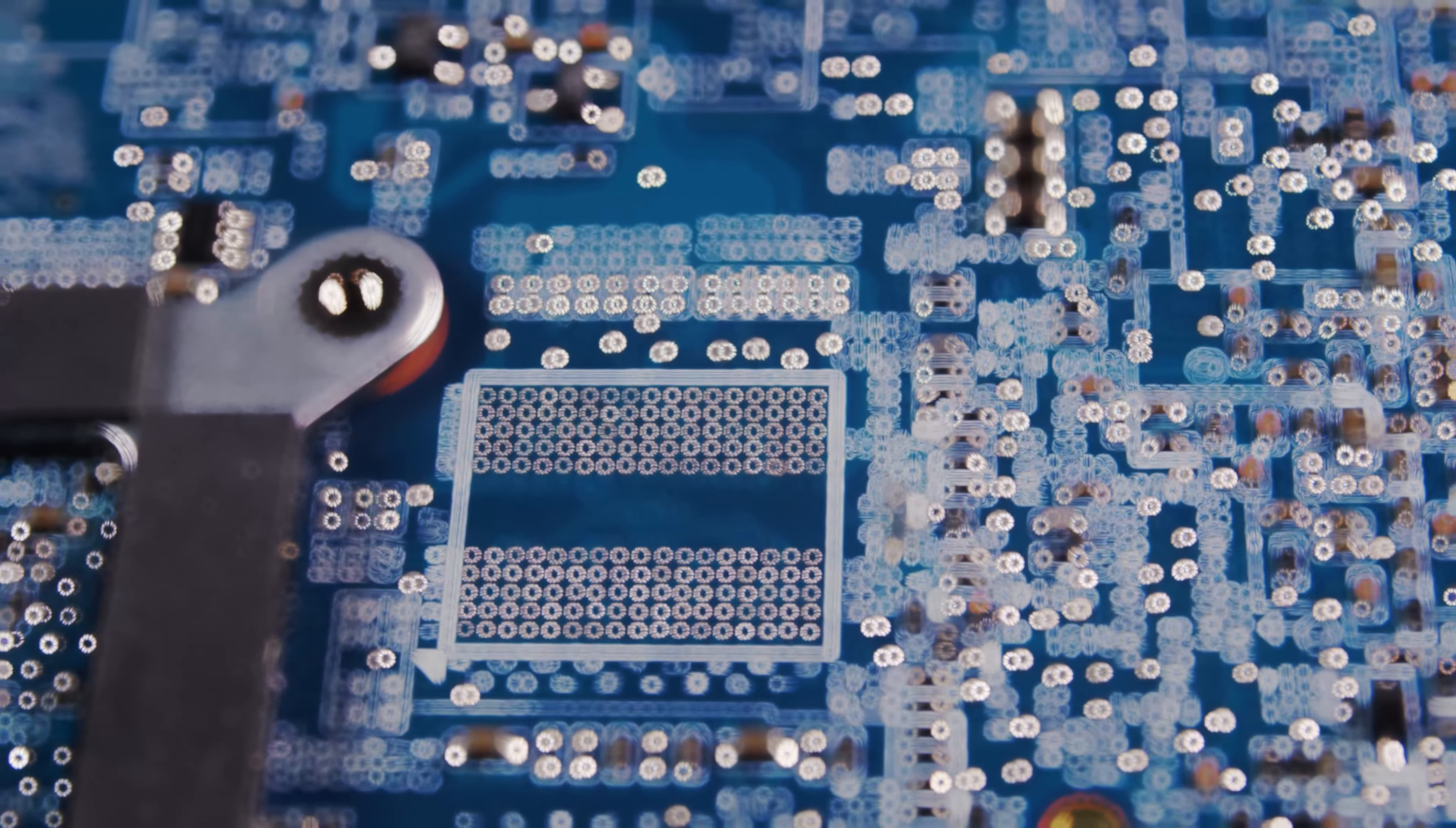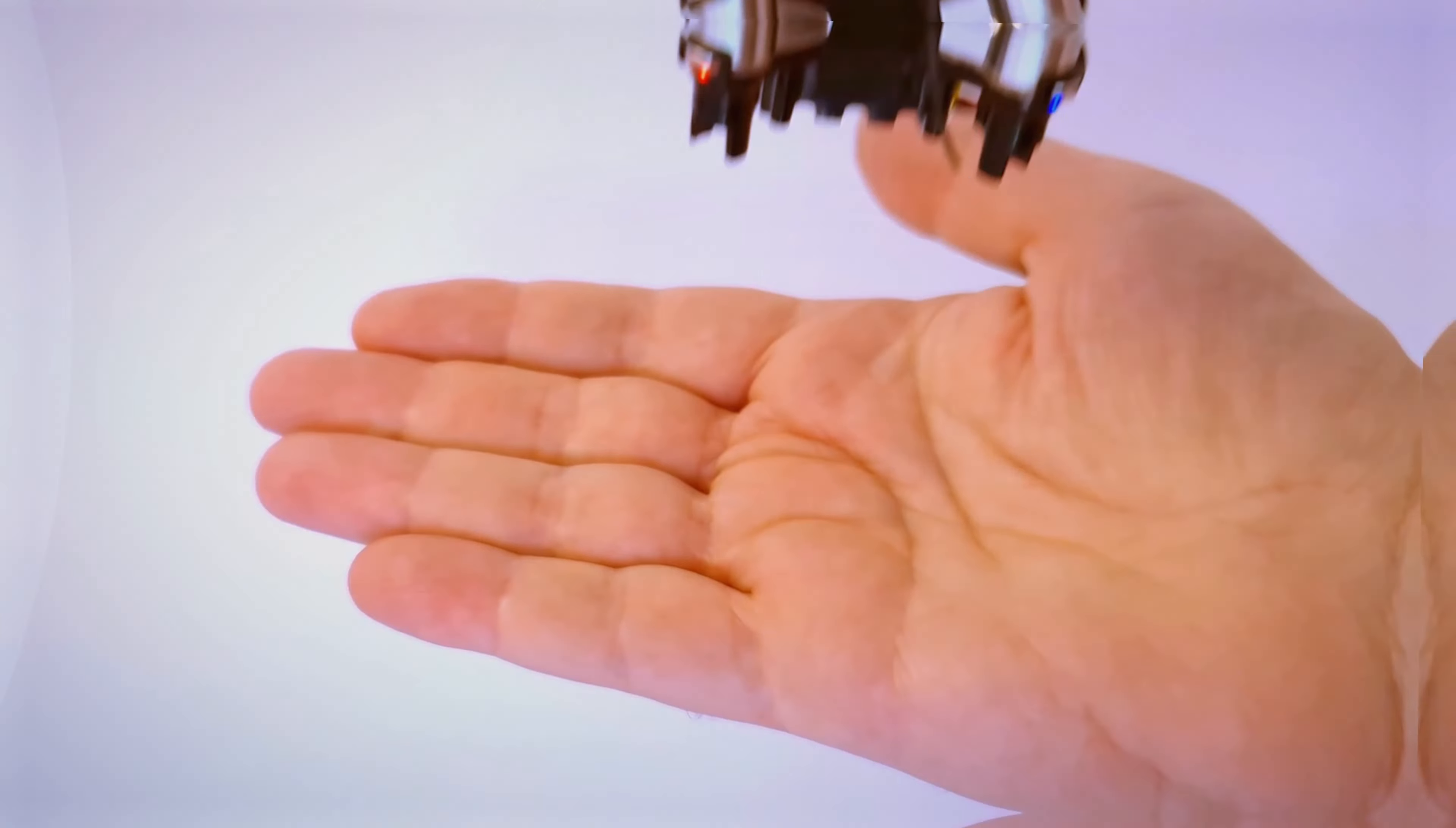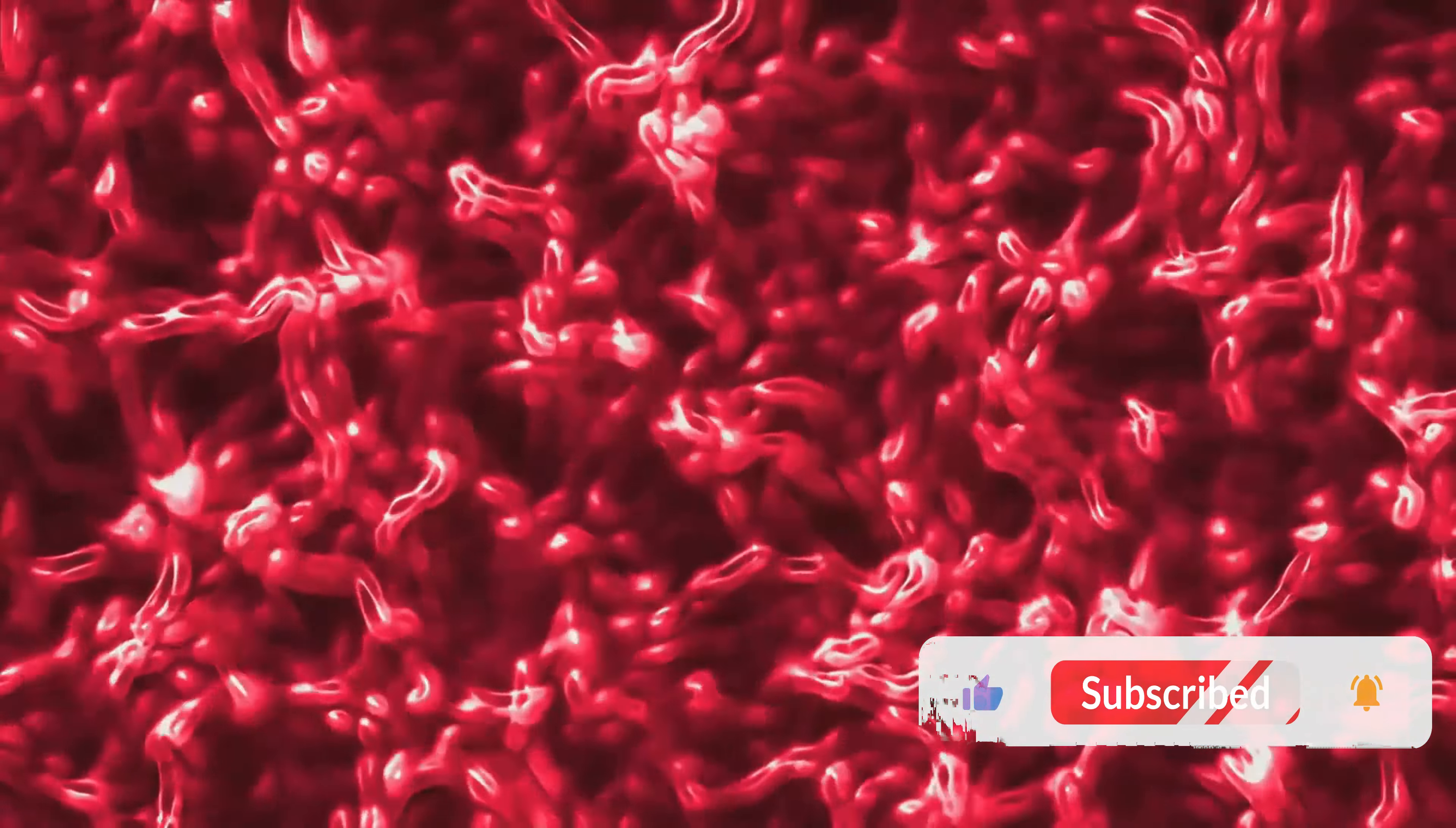But what's the point of a robot that's so small, you might ask? The applications are as wide-ranging as they are fascinating. Picture these microbots being used in environmental monitoring, where their small size allows them to access areas that would be otherwise unreachable. Or consider their use in the medical field, where they could potentially perform minimally invasive procedures, providing a new frontier in healthcare. But what are the risks to use medical microbots? To find out, click on the next video.